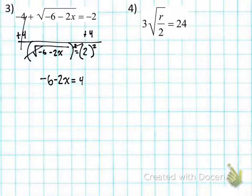Now I can square both sides. I want you to finish the problem now. We've got negative 6 minus 2x is equal to 4. And I'll come around and check your work. Okay, so on this one, we're adding 6 and divided by negative 2. When you get that, you get x is equal to negative 5 as your final answer. That's number 3.